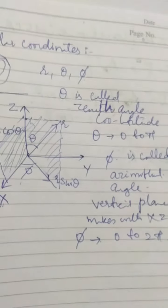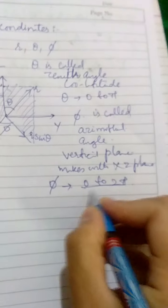To understand why phi ranges from 0 to 2 pi, consider the example of a cardboard. Imagine one plane represents the xz plane and another is a vertical plane — they can be at an angle. The angle between them can be 0 when the planes are together, and one complete rotation brings it to 2 pi. So the angle between any two planes ranges from 0 to 2 pi.